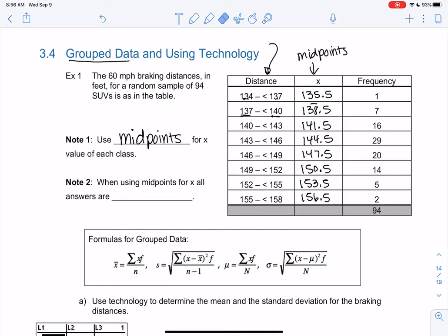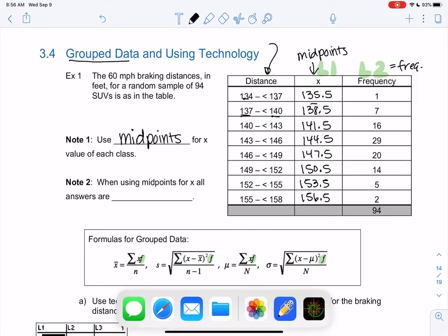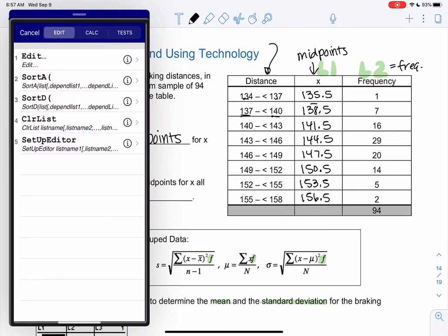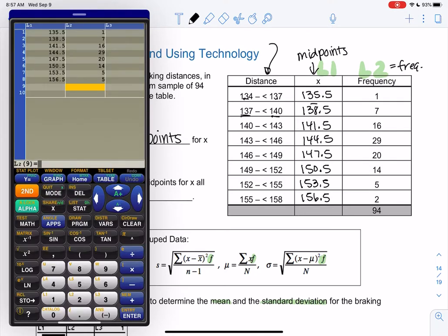So what we're going to do is we're going to go back to our favorite menu, stat, edit, so that we can find the mean and standard deviation in a second. The formulas are essentially the same. We just multiply by frequency. That's the new part. But the calculator will do that for us. And I'll show you how to make the calculator do that. So go back to stat, edit, and we'll do two lists this time. We're going to put the midpoint into L1, and L2 will be the frequencies.